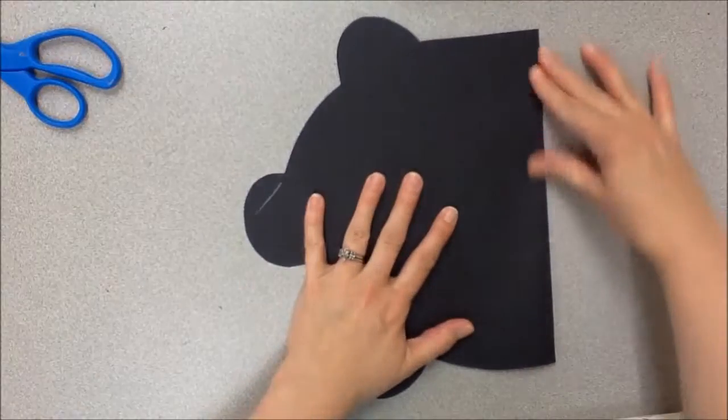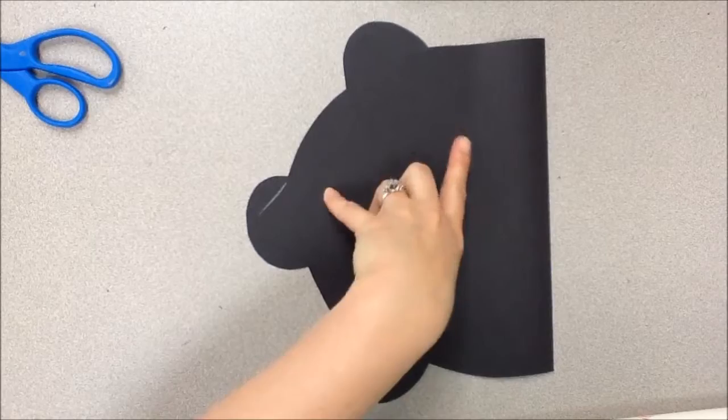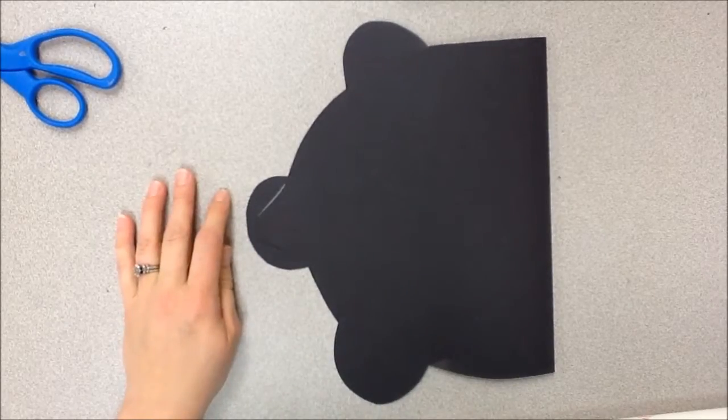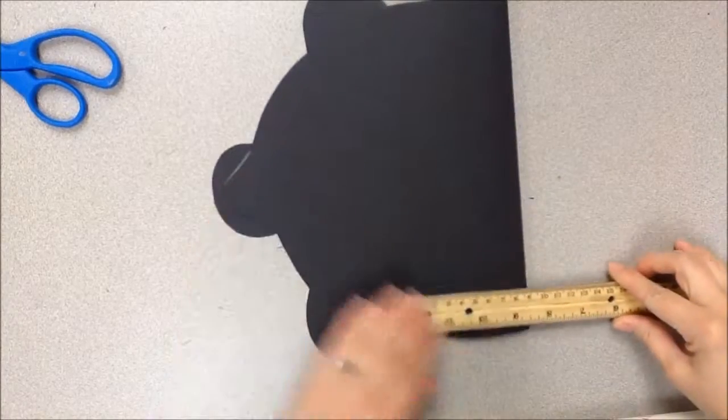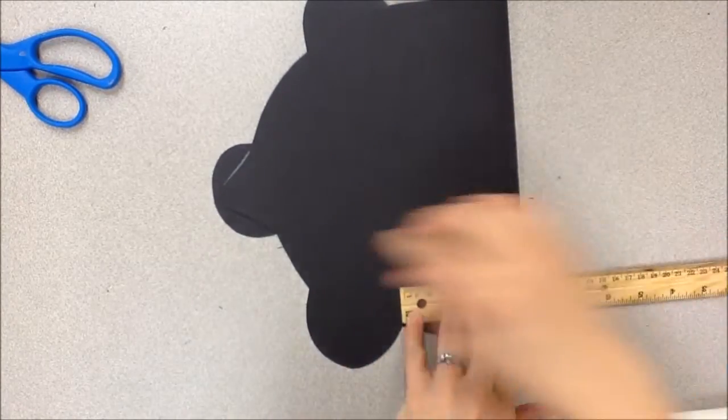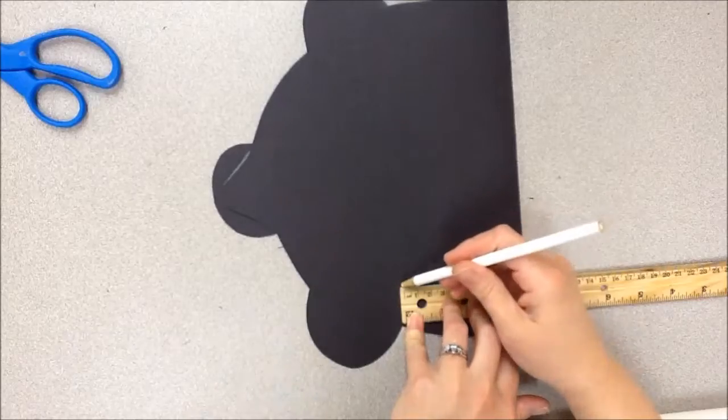I'm going to fold him back together because for the next part we have to add the stripes in here that we're going to cut to help with our weaving. Now the easiest way to do this next part is to take a ruler and put it pretty straight on the side of your turtle, like this.